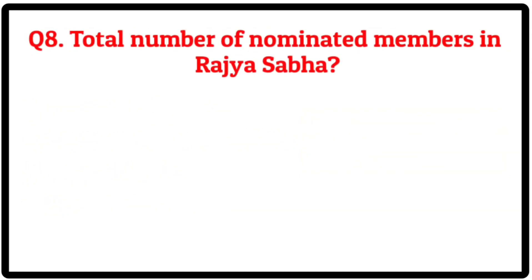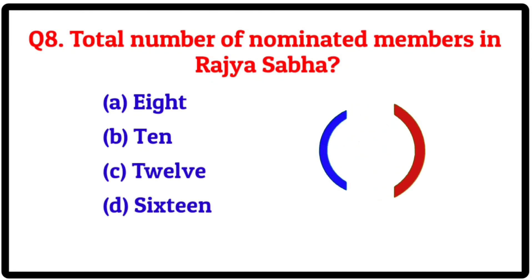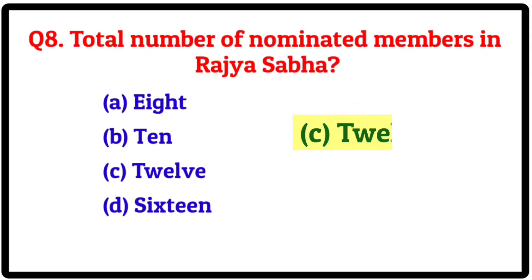Question 8. Total number of nominated members in Rajya Sabha — Option A: 8. B: 10. C: 12. D: 16. Correct answer is C: 12.